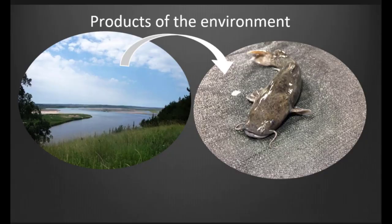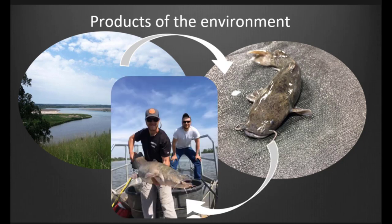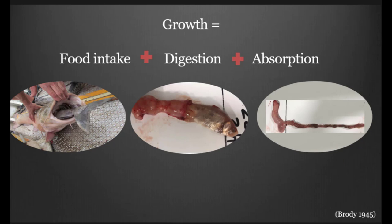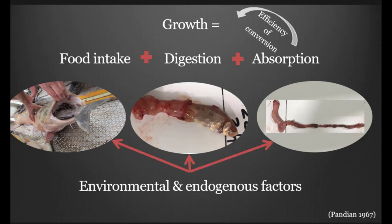We know that fish are truly products of the environment in which they live. Due to the dynamic nature of the environments, fish have evolved to be incredibly plastic. Abiotic factors are known to influence the physiology as well as the behavior of these individuals, which in turn influences things such as growth. This is important to management and therefore important for us to understand. Brody in 1945 suggested that there are three successive steps important to fish growth: food intake, digestion, and absorption. Later Pandian suggested that environmental and endogenous factors were actually influencing these three successive steps, which influenced the efficiency of conversion of the food energy into fish growth.